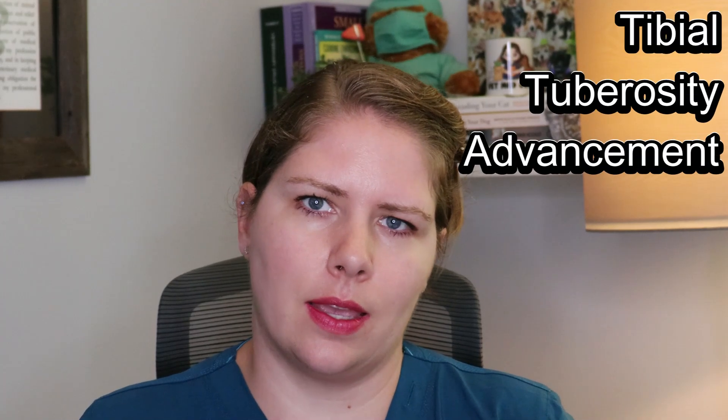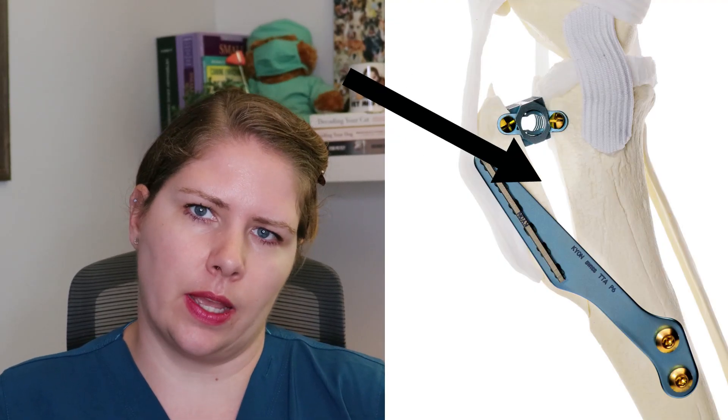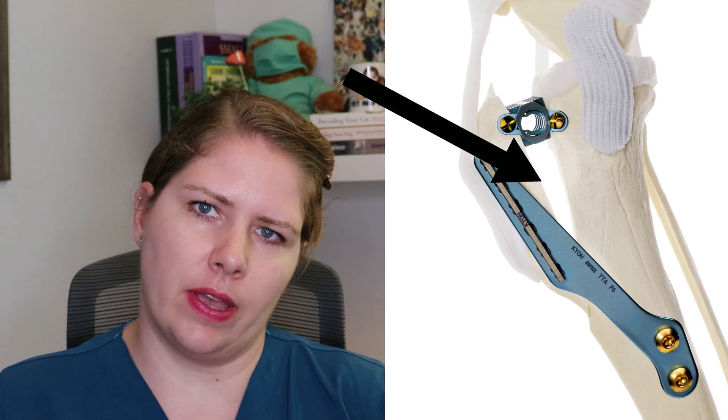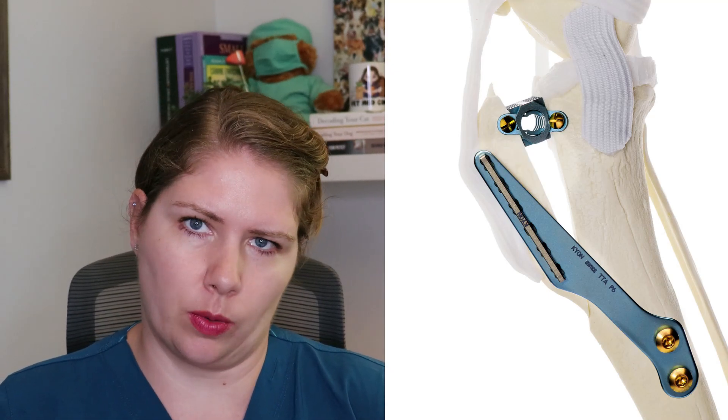There used to be another procedure called TTA, in which a linear cut along the front of the tibia is made and then it is advanced forward until it is about 90 degrees from the quadriceps. As this procedure isn't as successful as the TPLO, we won't spend much time covering it.